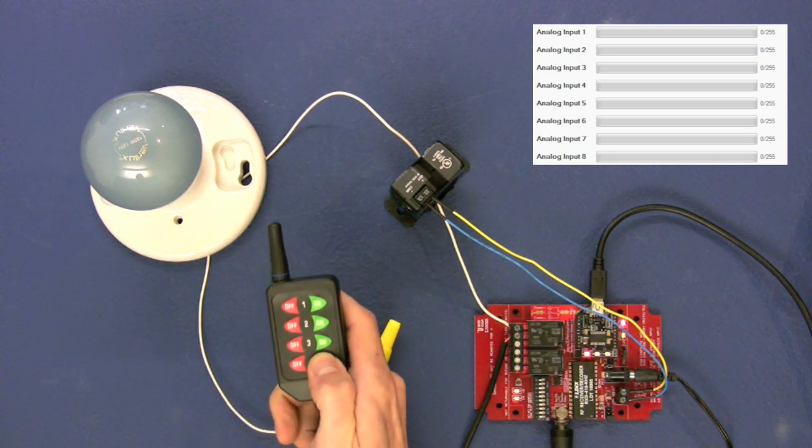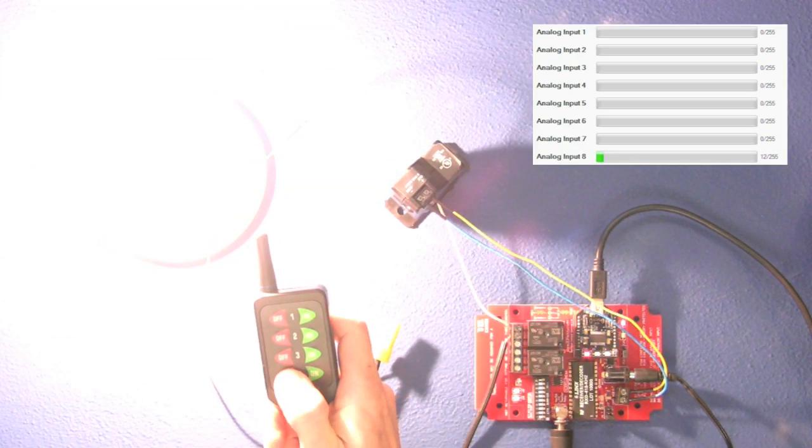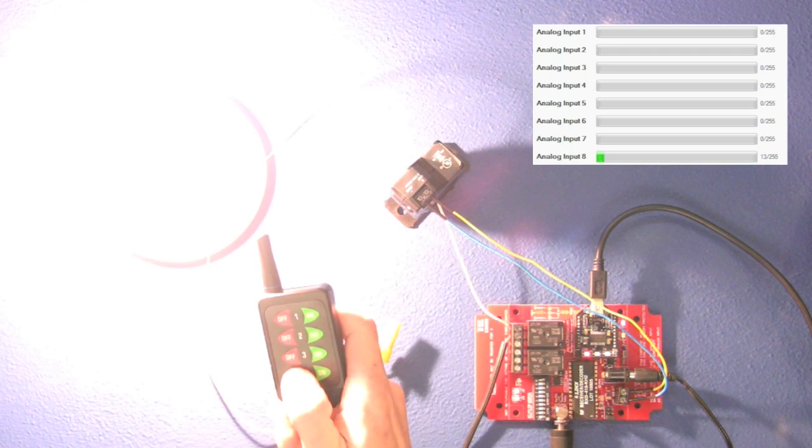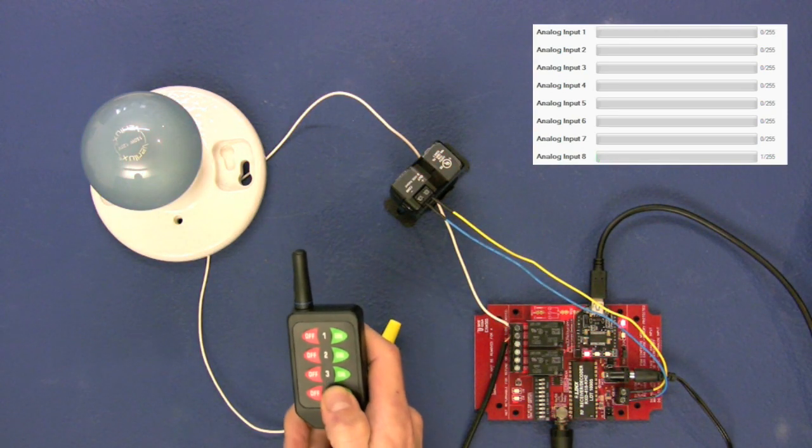When the light is turned on, you'll see analog input 8 reads all the way up to 13, whereas the last light bulb only ran up to 8. This is because this bulb pulls more current than the previous bulb.